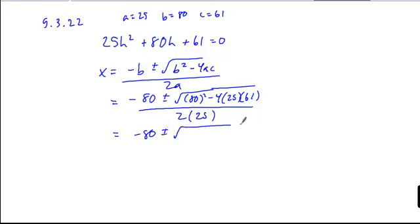As we look to simplify this, 80 squared is 6400. 4 times 25 is 100, times 61 is minus 6100.